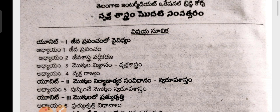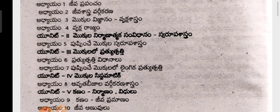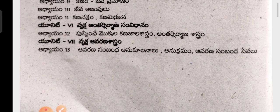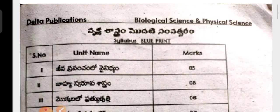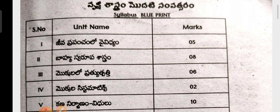We are moving on to the first botany, or Vrikshi Shashtram. I am providing the entire material. Botany has 7 units, and these 7 units have a part of the syllabus blueprint.